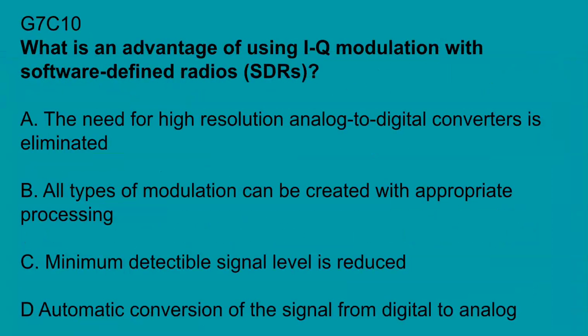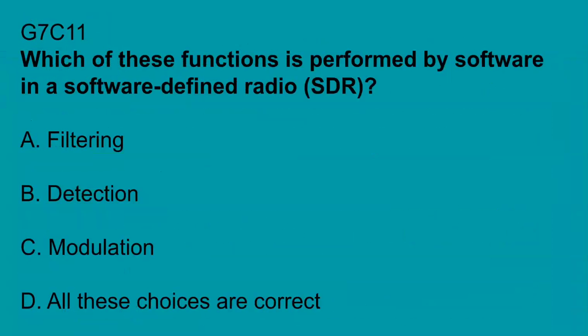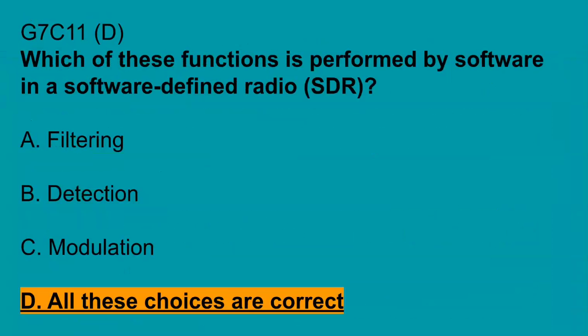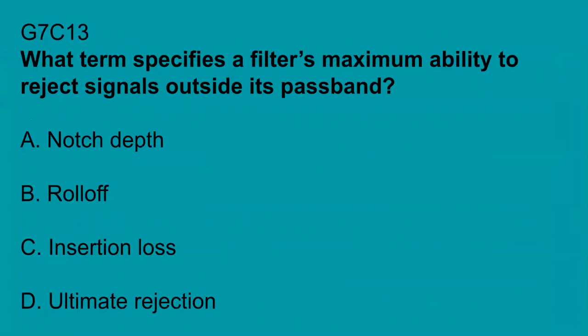G7C10, what is an advantage of using IQ modulation with software-defined radios? All types of modulation can be created with appropriate processing. G7C11, which of these functions performed by software in a software-defined radio? All of these choices are correct, so filtering, detection, and modulation. G7C12, what is the frequency above which a low-pass filter's output power is less than half the input power? That's the cutoff frequency. G7C13, what term specifies the filter's maximum ability to reject signals outside its passband? Ultimate rejection.